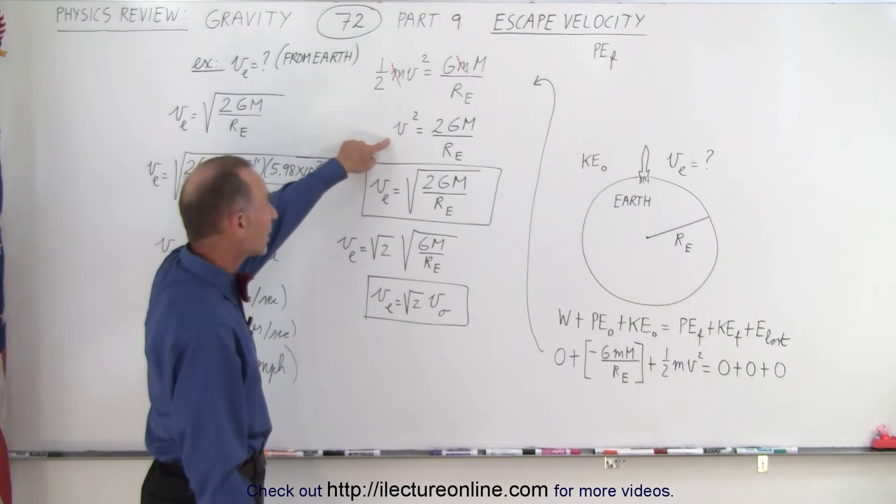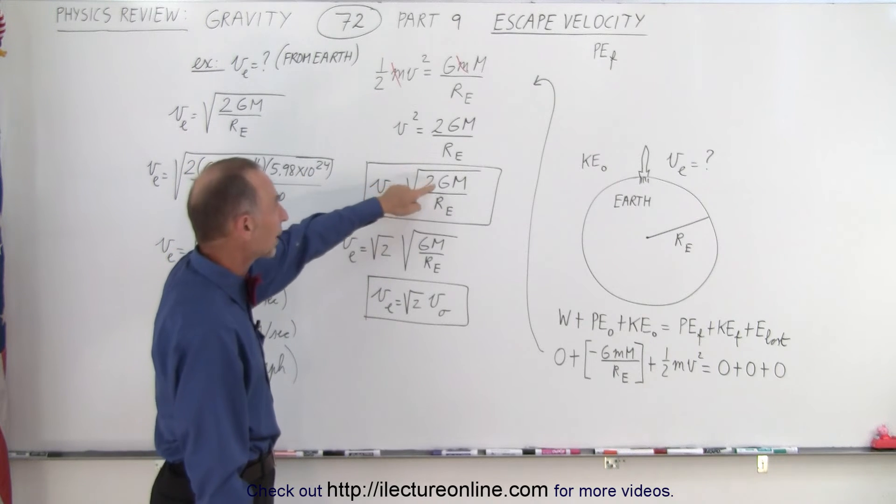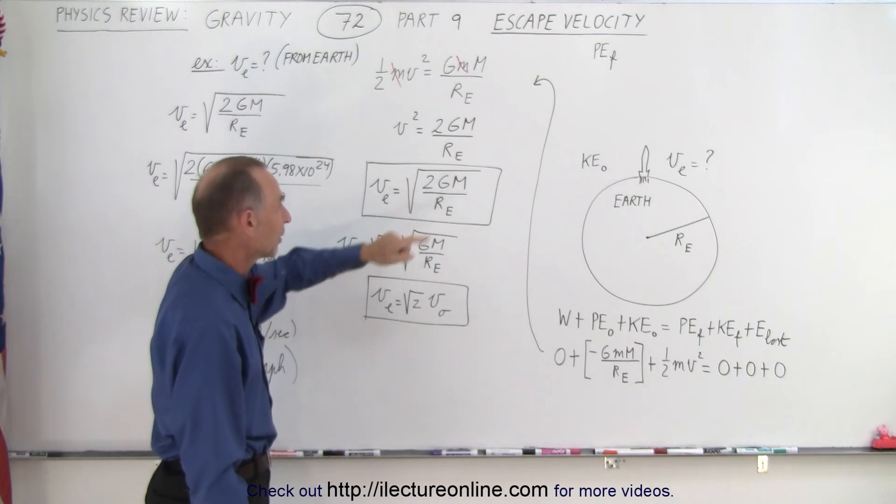Solve that equation for v and you get v equals the square root of 2 times g times the mass of the Earth divided by the radius of the Earth.